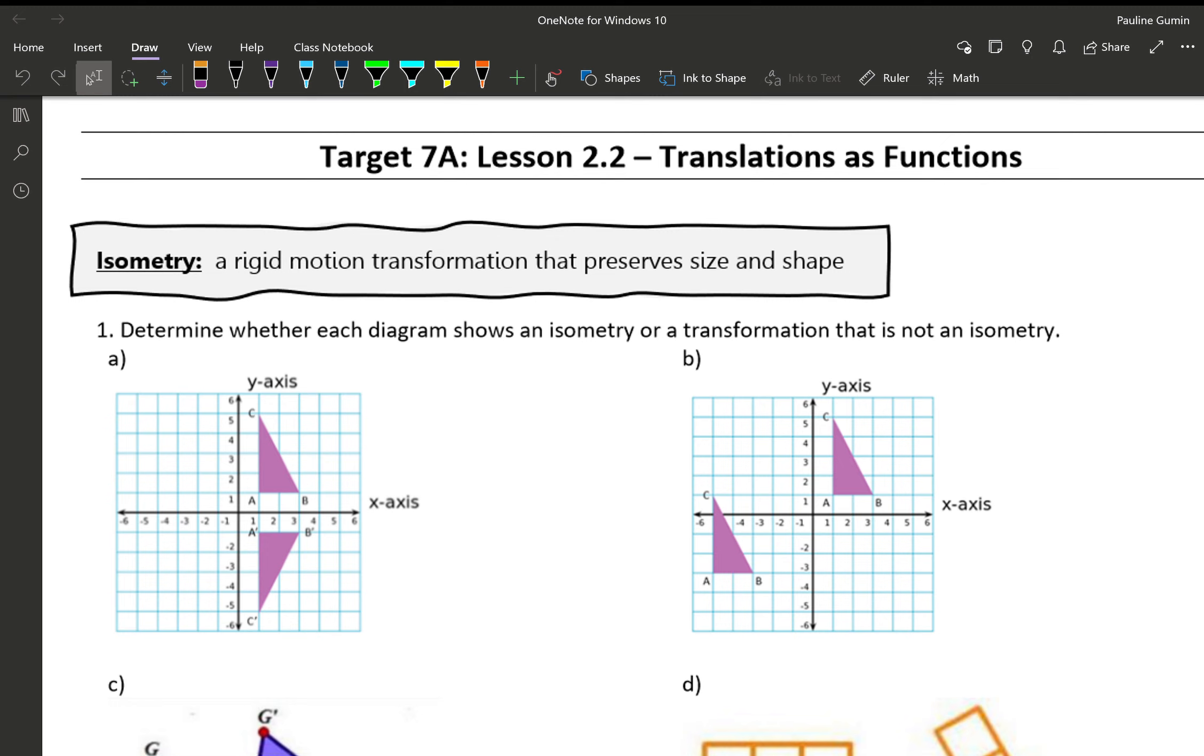One of the first words we've got to learn in geometry is isometry. So isometry is a rigid motion transformation that preserves size and shape. That means when we move or reflect an image it stays exactly the same.